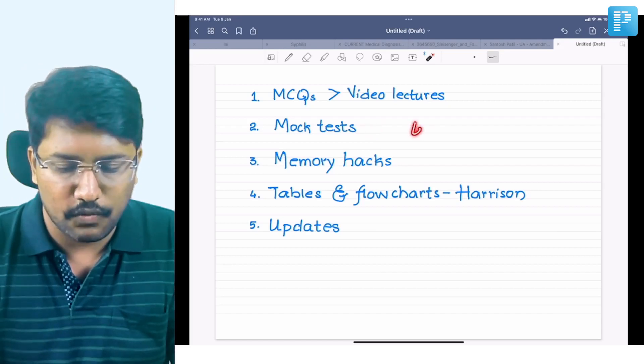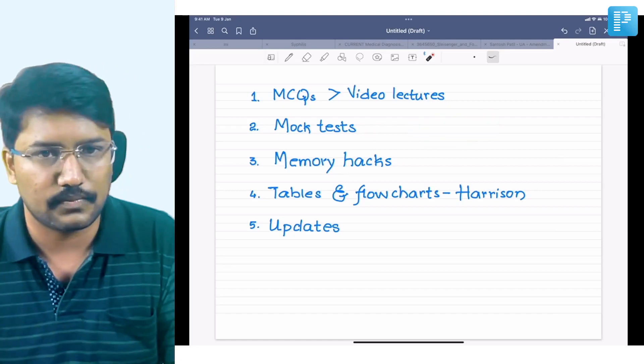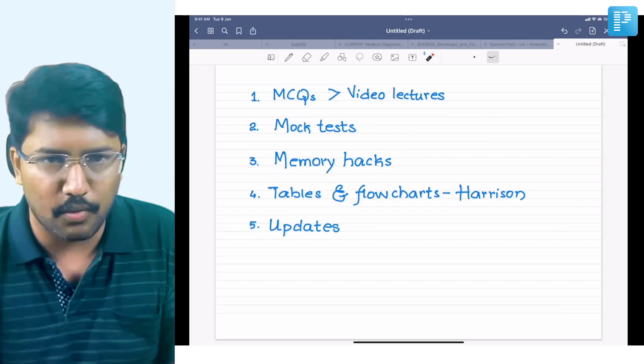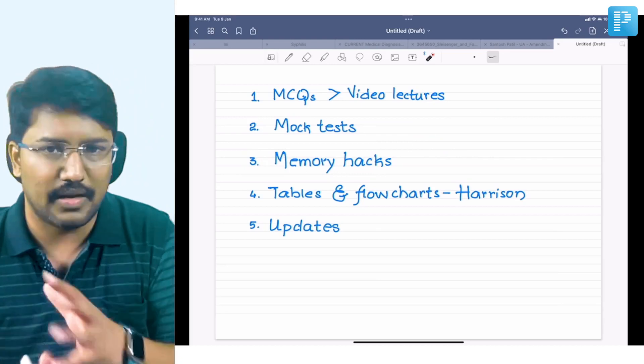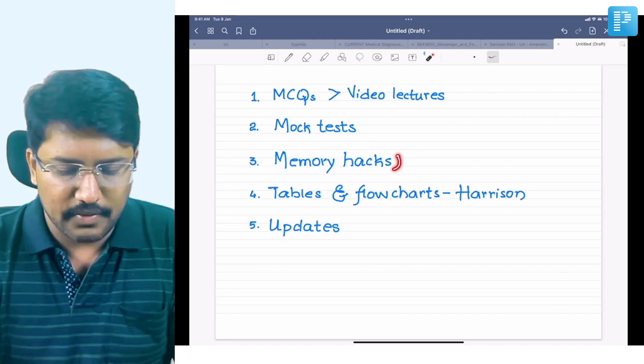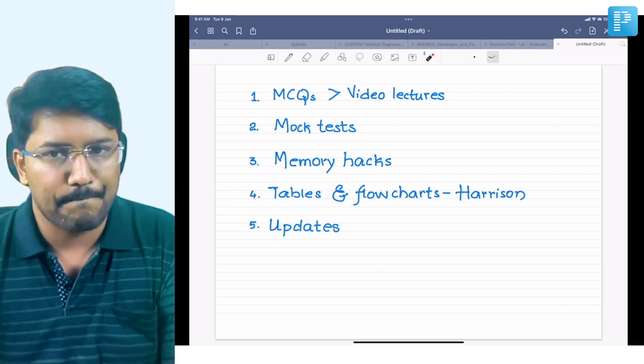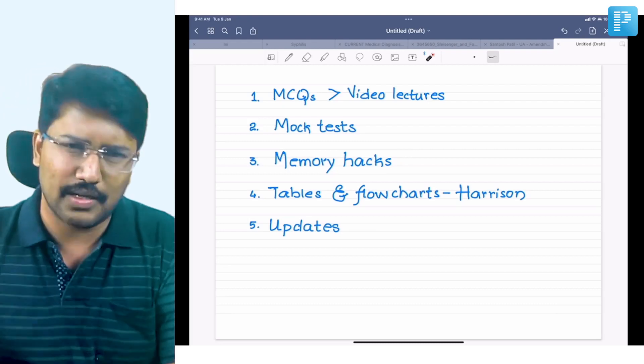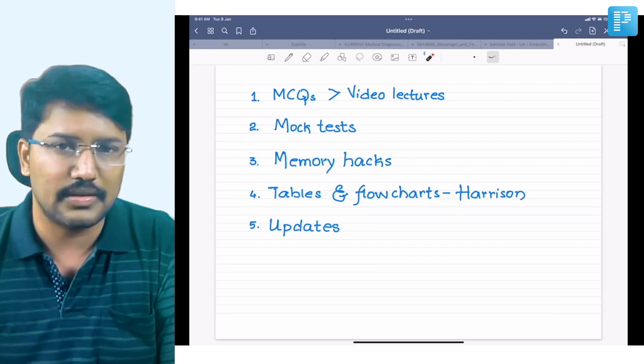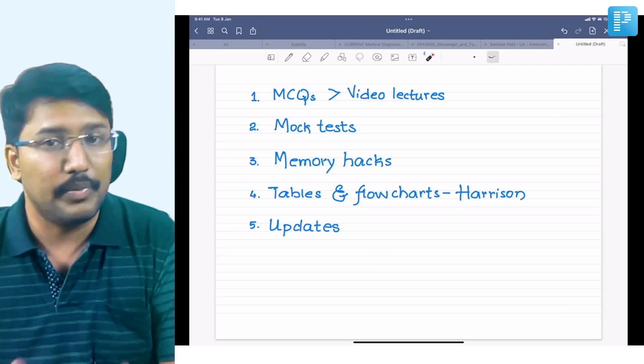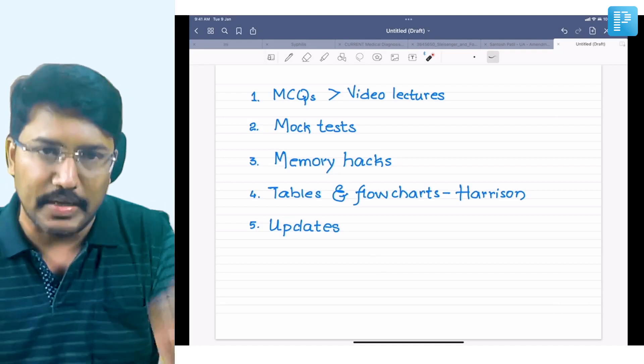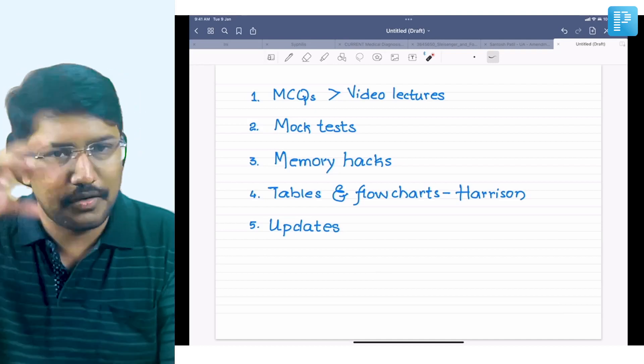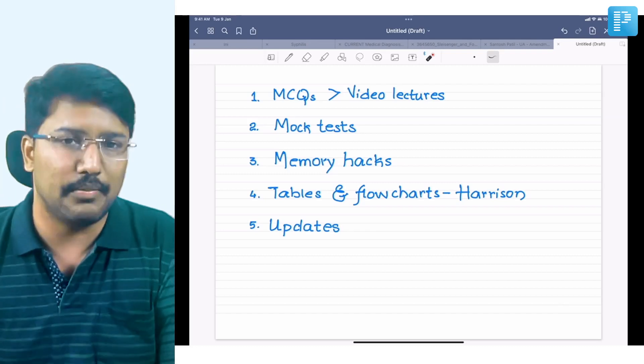The third point is equally important. I call them memory hacks. Someone may call it mnemonics. Mnemonics may not work for everything, but we can develop memory hacks to remember stuff. This is particularly important at this point because we know some topics are very important but very difficult to remember, so we end up ignoring them. We know a question will come, but even if I read it for two to three hours, I won't be able to remember it, so we say, 'Leave it.' Please don't do that. If you know any topic is highly likely to have a question, do not miss that topic.